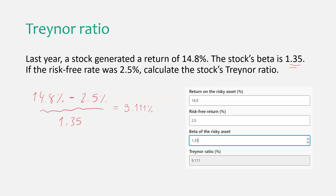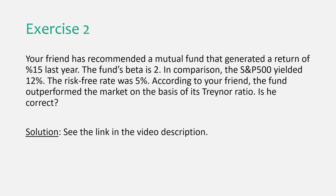If you do this, you get the answer as 9.1%. So basically this stock is generating 9% return per unit of systematic risk. Beta captures sensitivity to market movements, and the market represents systematic risk — sometimes called market risk. The market portfolio has a beta of one, so this stock's beta of 1.35 means it is more sensitive to market movements. Here is a second exercise for you to check your understanding, and the solution is in the video description on the same page as the Treynor Ratio calculator.